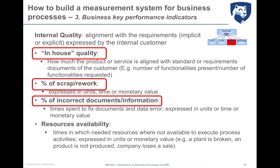Resource availability is also a proxy for internal quality — measuring how many times needed resources, whether human, physical, machinery, equipment, or IT systems, were unavailable when needed for process activities. This can be expressed in units or monetary value. For example, when a plant is broken and production stops, the company loses sales — representing the monetary value of resource unavailability.